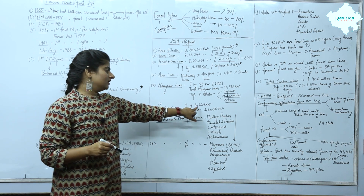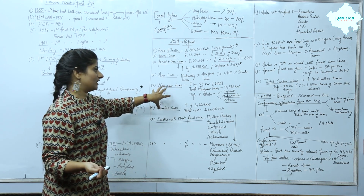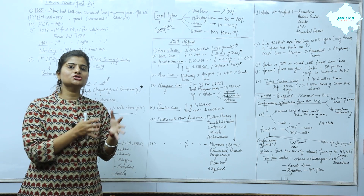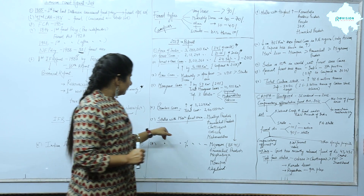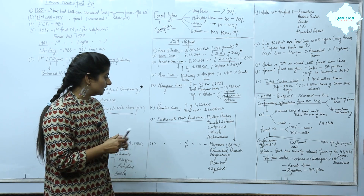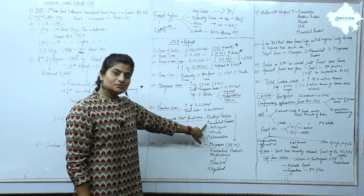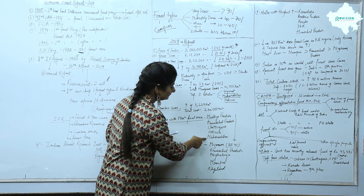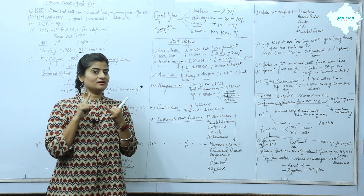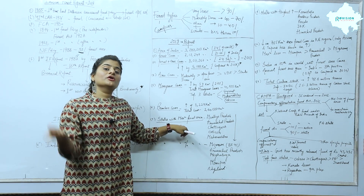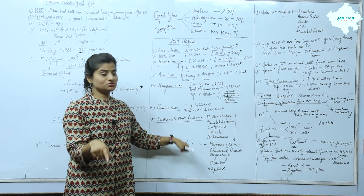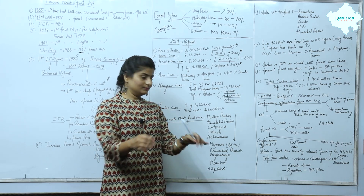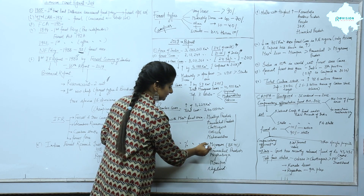Bamboo cover has also increased by 3,229 km². So mangrove cover and bamboo cover are positive factors, showing that conservation measures are yielding positive results. Regarding important states with maximum forest area: Madhya Pradesh is first, then Arunachal Pradesh, Chhattisgarh, Odisha, and Maharashtra. In terms of percentage of total area covered by forest, the highest percentage is Mizoram at 85.41%, followed by Arunachal Pradesh, Meghalaya, and Manipur — all northeastern states.